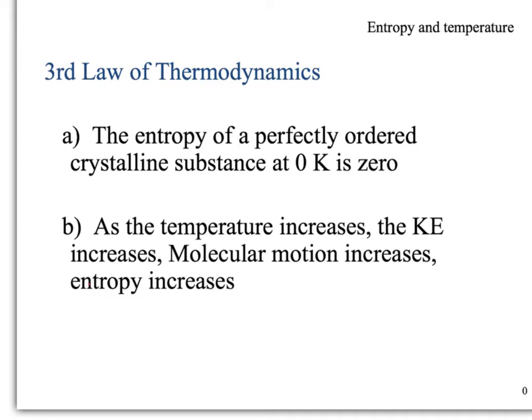The third law of thermodynamics states that the entropy of a perfectly ordered crystalline substance at 0 Kelvin is zero. A crystalline substance has a proper, ordered, repeating unit cell — unlike amorphous materials, which have irregular shapes with no repeating unit cell. A perfectly ordered crystalline material has no defects within its structure.